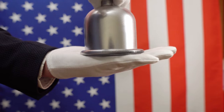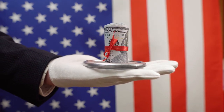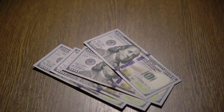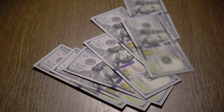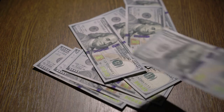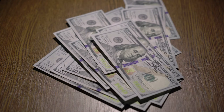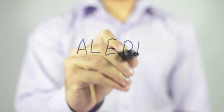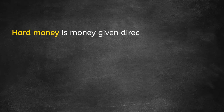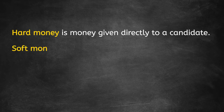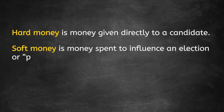Let's talk dollars and cents — how are campaigns financed? The nature and volume of political messaging has led to large amounts of money spent during election cycles, and the more money spent, the more the role of money in elections is both justified and criticized. One key issue in campaign finance centers on differentiating between hard and soft money. Hard money is money given directly to a candidate. Soft money is money spent to influence an election or party-building activities.